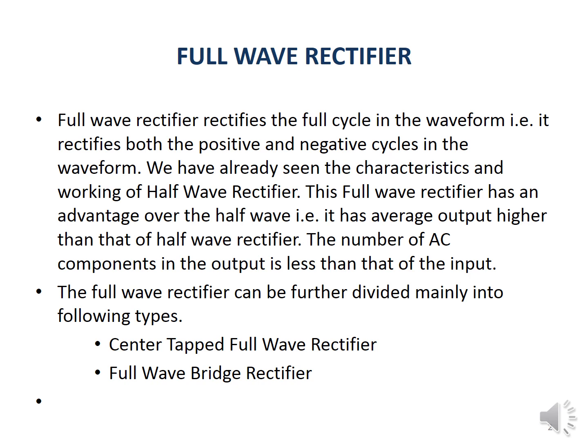But in the case of the full wave rectifier, during the positive as well as negative half cycle, the AC voltage is converted to DC. The full wave rectifier has an advantage over the half wave rectifier — the number of AC components in the output is less than in the input voltage.